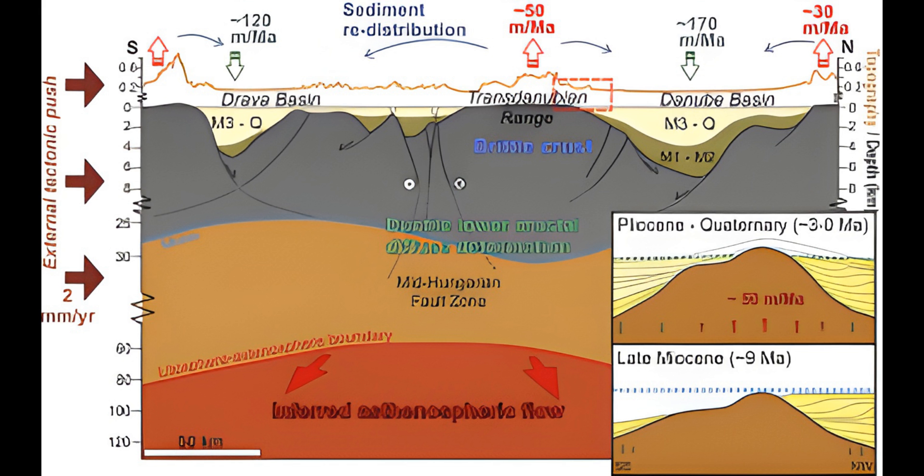An example of isostatic uplift would be post-glacial rebound following the melting of ice sheets. The Hudson Bay region of Canada, the Great Lakes of Canada and the United States, and Fennoscandia are currently undergoing gradual rebound as a result of the melting of ice sheets 10,000 years ago.